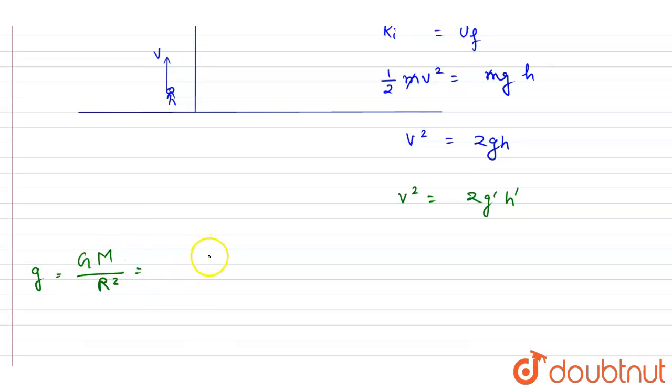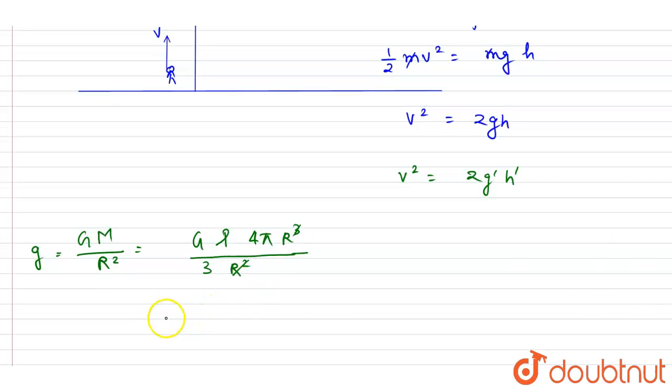If I write down the mass, I can write it as ρ times 4π by 3 r³. This will get cancelled out and you will get the gravitational acceleration equals 4πρG by 3r. It is proportional to the radius of the planet.